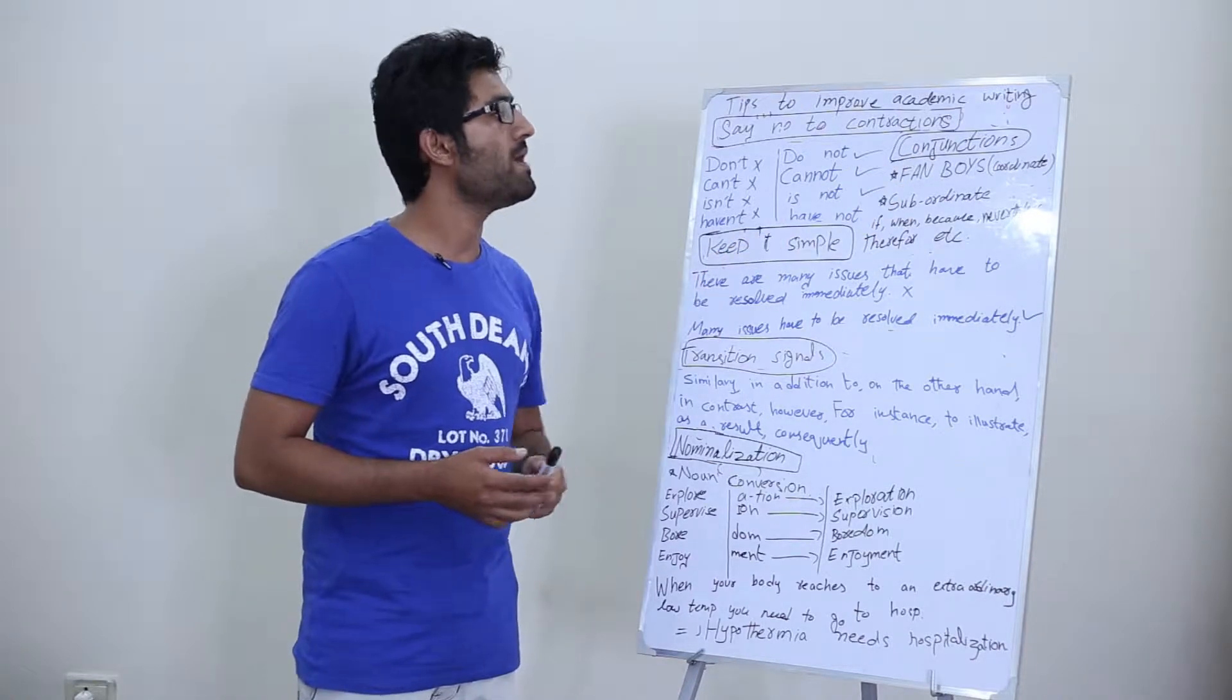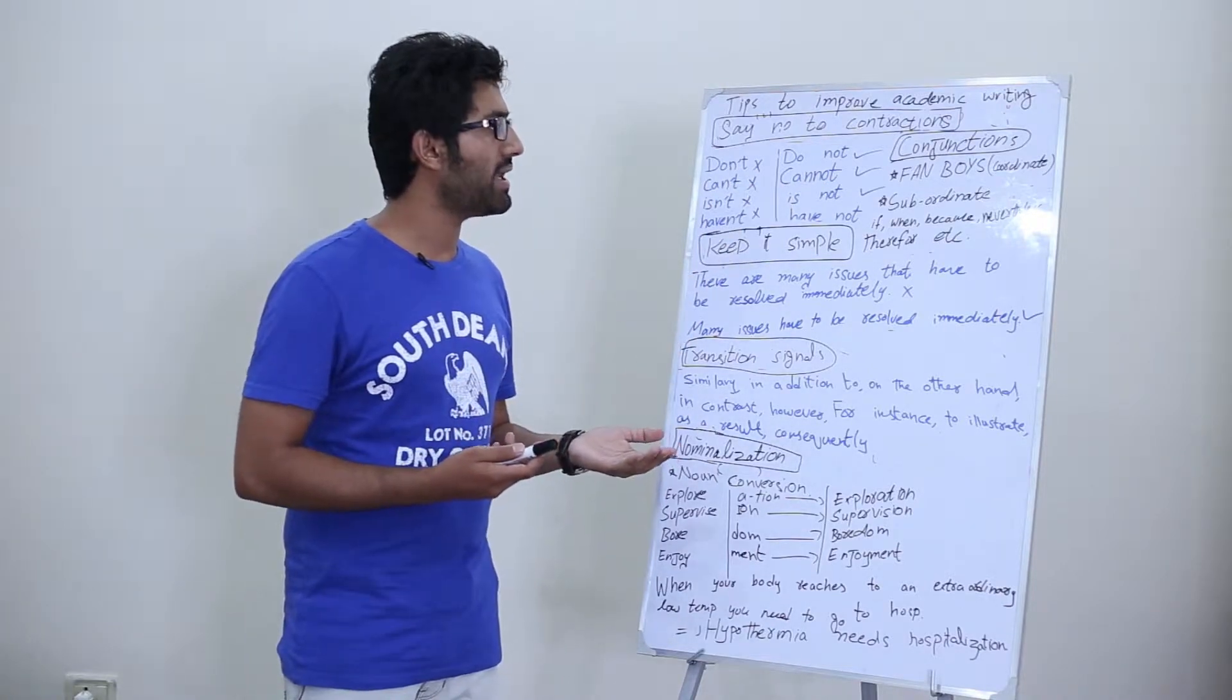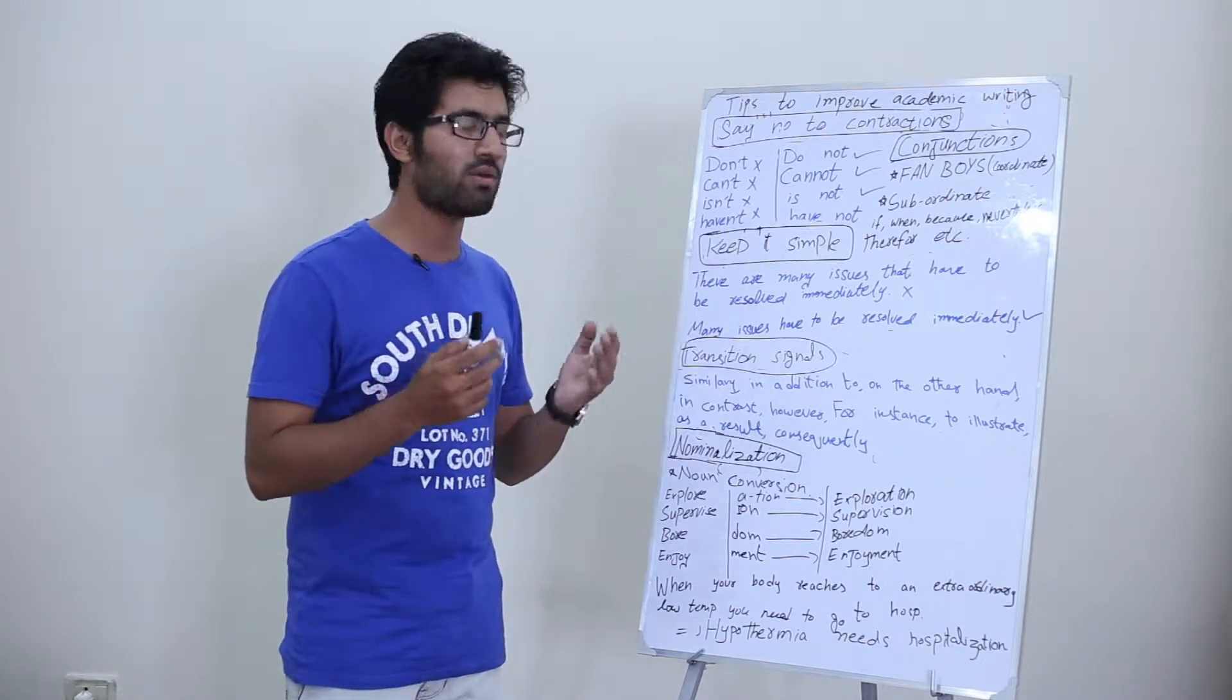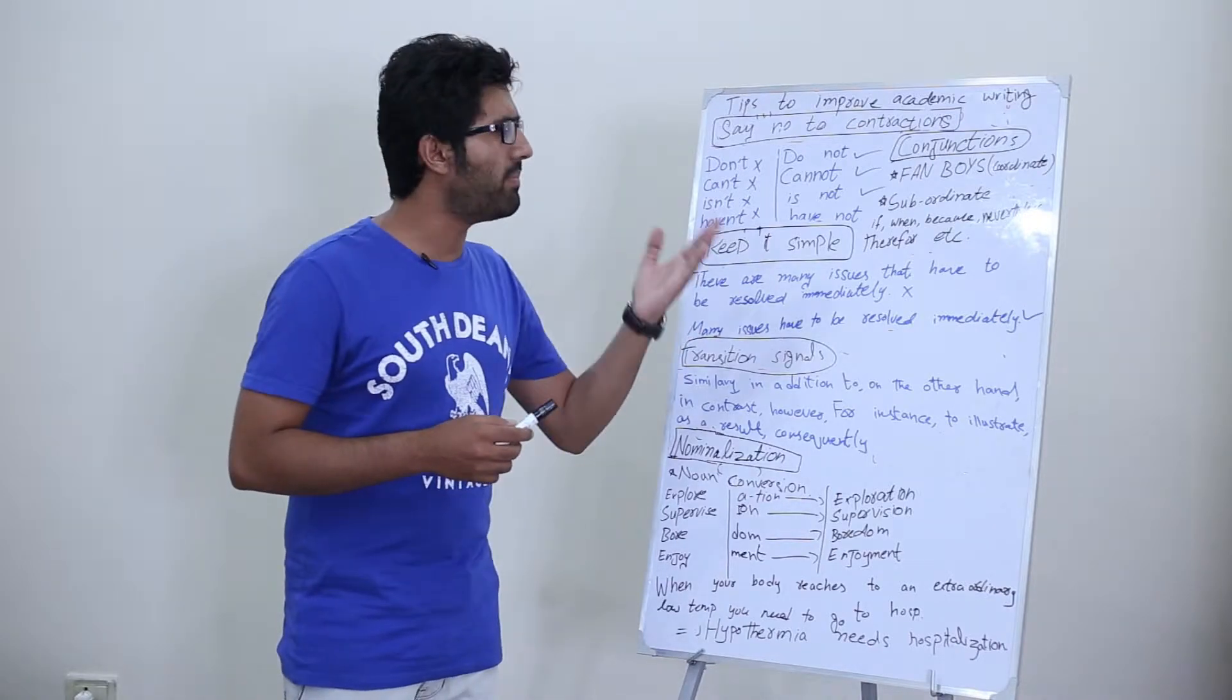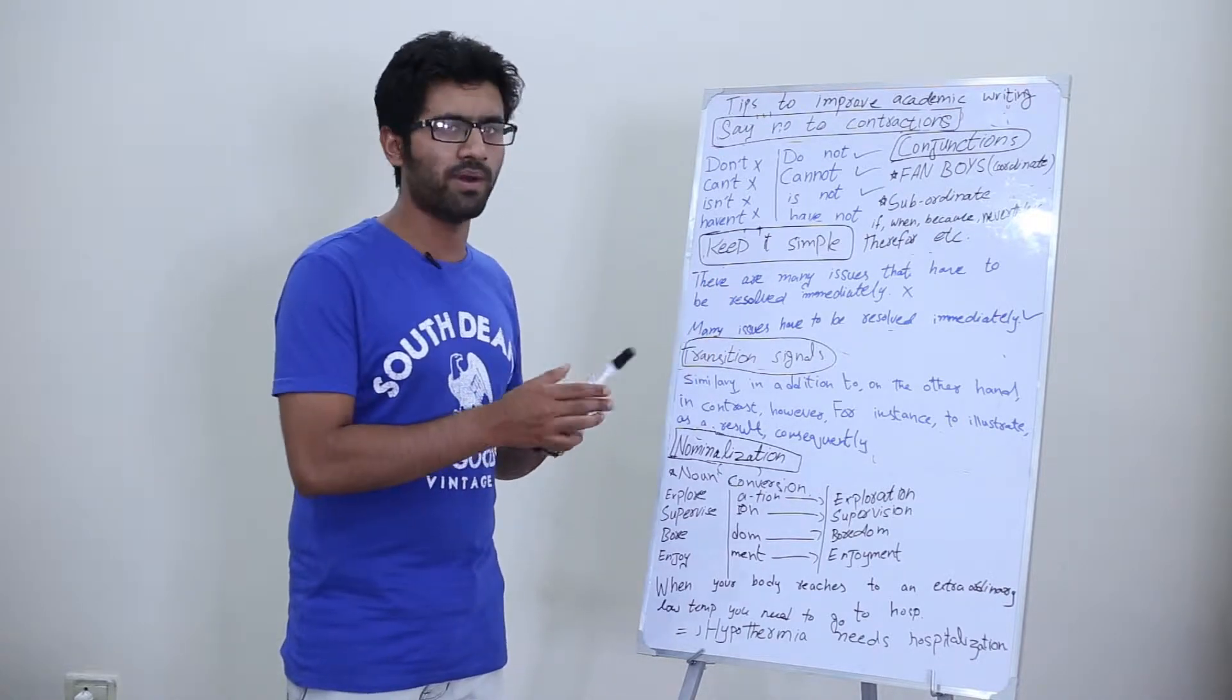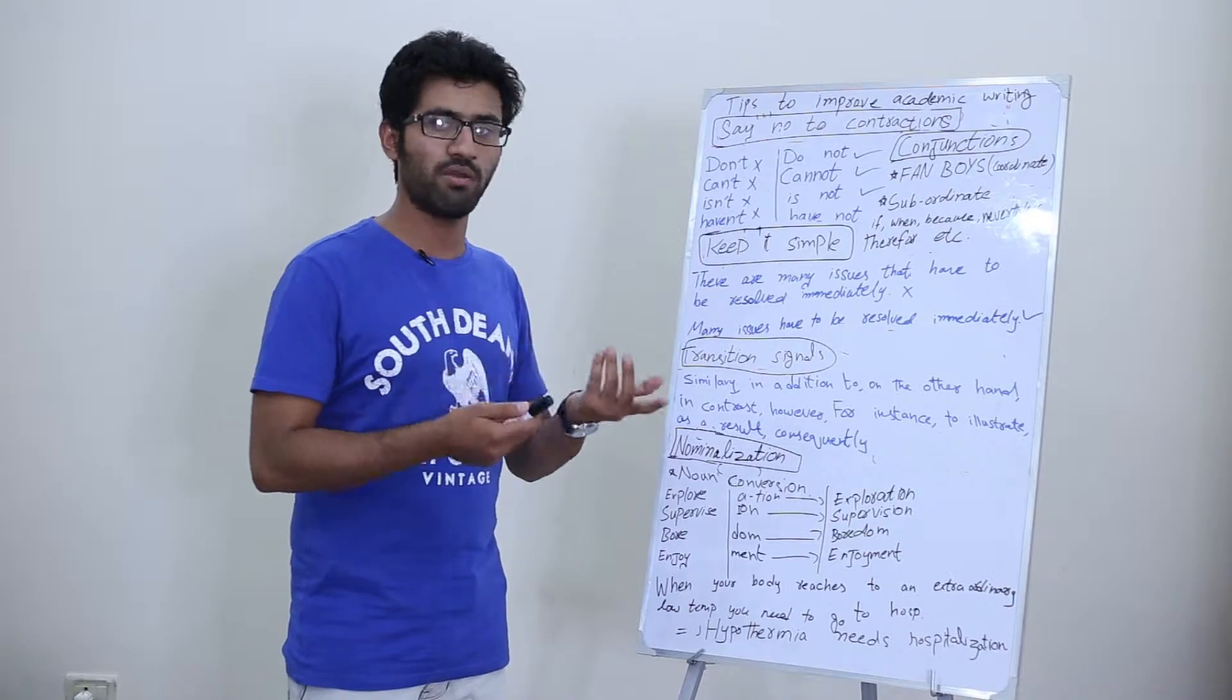You should know where to use them and how to use them. Like 'for' when you're giving any idea in your clause and the reason has to be mentioned. 'And' when both clauses are of equal rank or you're giving a similar idea. 'Nor' is for negative clauses. 'But' is when you're giving the opposite idea. 'Or' is when you're giving an option. 'Yet' is similar to but. 'So' is when you're giving the reason.